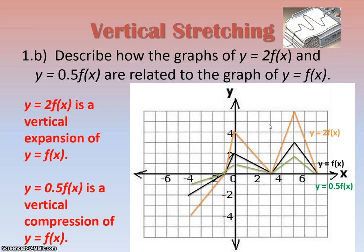When I put a 2 in front of f(x), it's going to be a vertical expansion of the original by a factor of 2. Just like if I put a 0.5 in front of f(x), it's going to be a vertical compression of the original by a factor of a half.